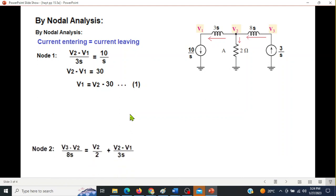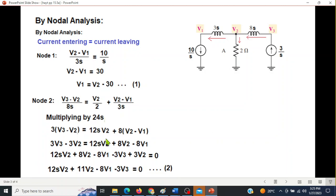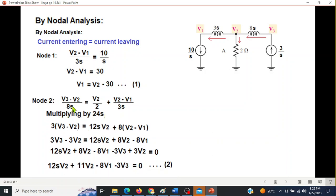Now we come to node 2. This is current entering: V3 minus V2 divided by 8S. Current leaving is V2 minus V1 divided by 3S. So this is the equation. Here also we will simplify. Better way is to multiply with the LCM, which is 24.